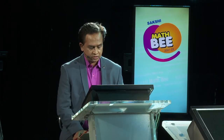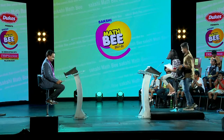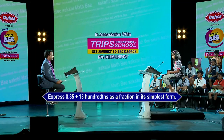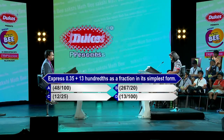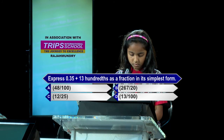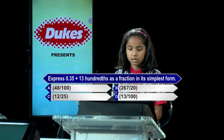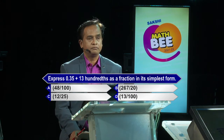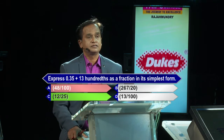May I call the next contestant, the last one — G-Akshia Reddy from Kendra Vidyalaya number 2, Uppal. Can we start? Yes sir. Express 0.35 plus 13 hundredths as a fraction in its simplest form. Options: A-48/100, B-267/20, C-12/25, D-13/100. Contestant answers option A-48/100. Are you sure? Yes sir. Kindly lock option A. I am sorry, 48/100 is incorrect. Option D is the correct answer. Never mind. All the very best.